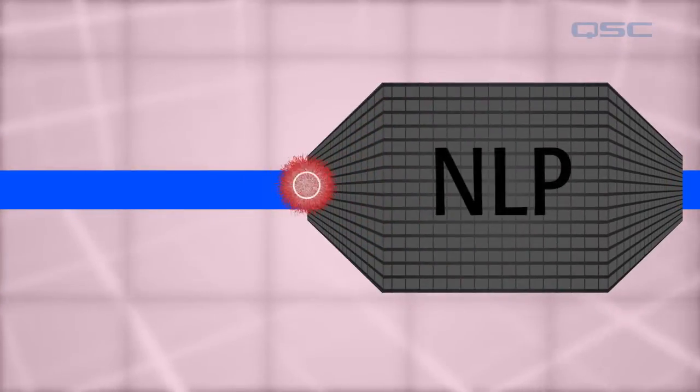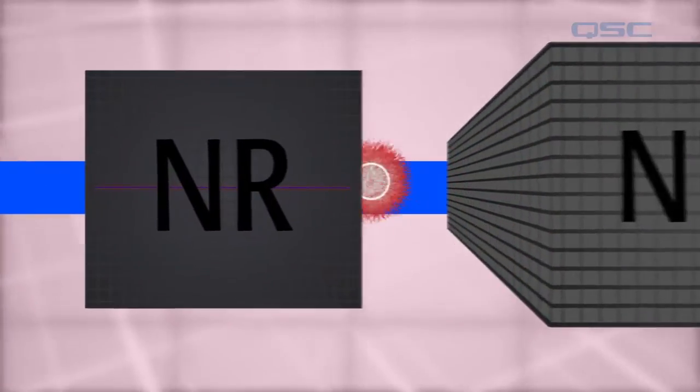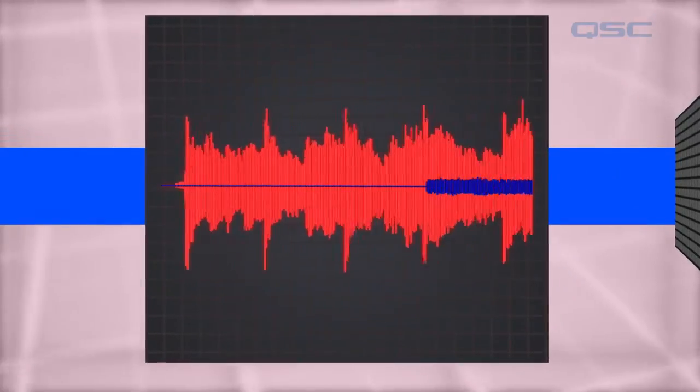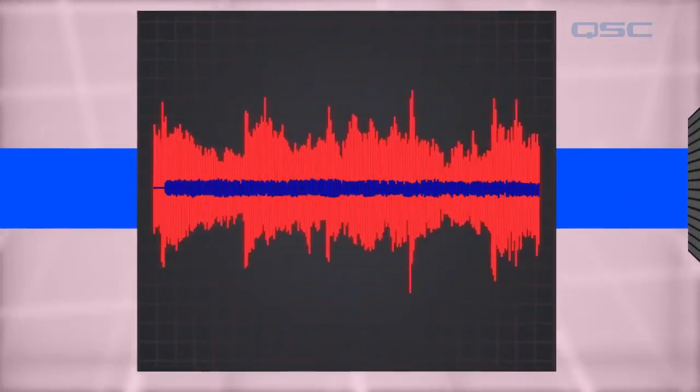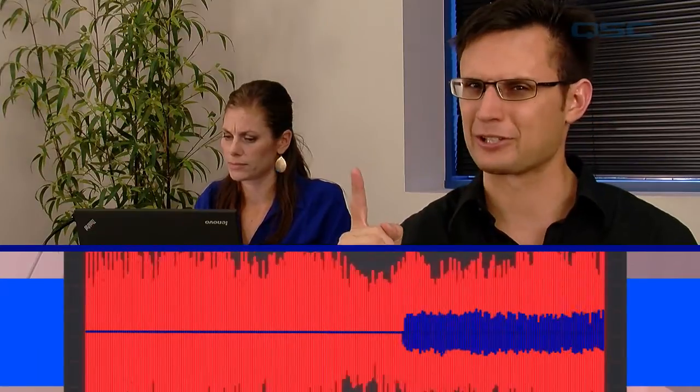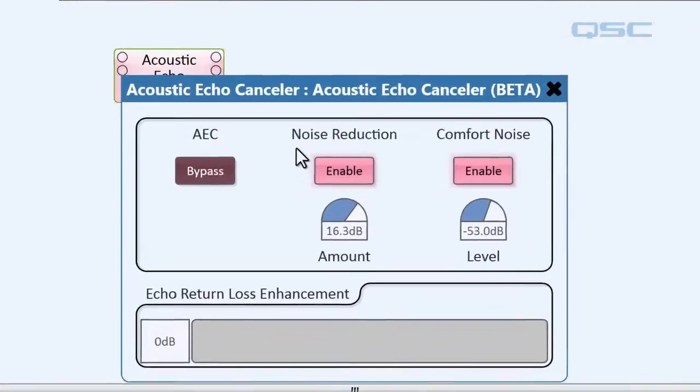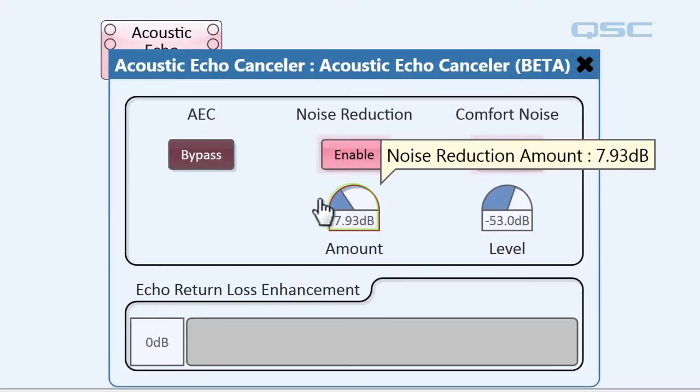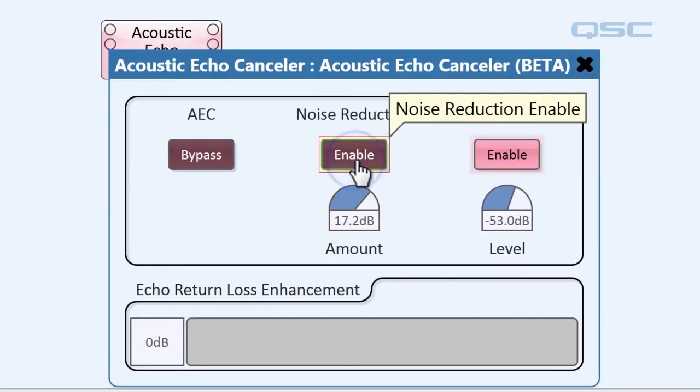Next in the processing path is noise reduction, or NR. Noise reduction attempts to remove ambient room noise by listening for steady sustained noise in the signal and subtracting it. This is so the far-end talker hears your voice and not your air conditioning hum, or the lawnmowers outside the window, or the invading alien army. You can adjust the amount of noise reduction in your AEC's control panel, and you can also enable or disable it with this button.